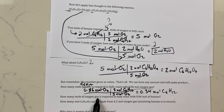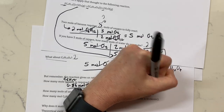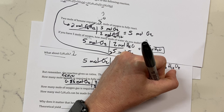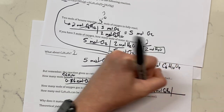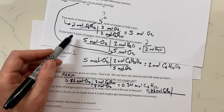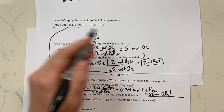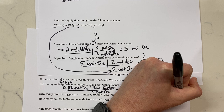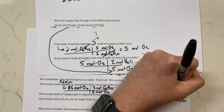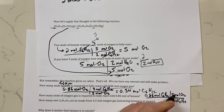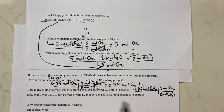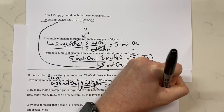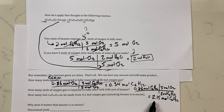Now it says how many moles of oxygen gas are required to fully react with 0.86 moles of hexane. We take 0.86 moles of hexane — that's what's given. For every two moles of hexane we need five moles of O2, using the coefficient ratio. So 0.86 times five divided by two gives an answer of 2.15, or 2.2 moles of O2 with appropriate significant figures.